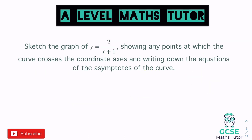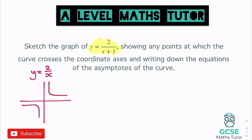The next question: sketch the graph of y = 2/(x + 1), showing any points where the curve crosses the coordinate axes and the equations of the asymptotes. Compared to y = 2/x, there's a plus one next to the x. From graph transformations, that's f(x + 1) — adding to x is inside the bracket, so it affects the x-coordinate and does the opposite of what we expect: it moves the graph one to the left.